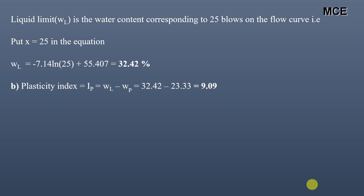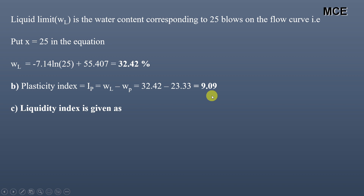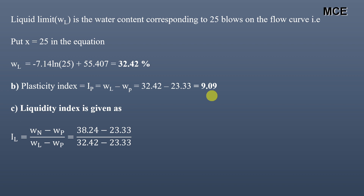The plasticity index equals the difference of liquid limit and plastic limit. With plastic limit = 23.33% and liquid limit = 32.42%, the plasticity index is 9.09%. The liquidity index is IL = (wn − wp) / (wL − wp), where wn is the natural moisture content, wp is the plastic limit, and wL is the liquid limit. Substituting the values gives a liquidity index of 1.34.